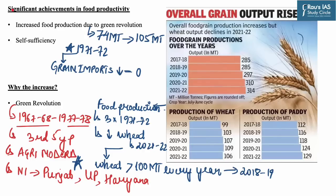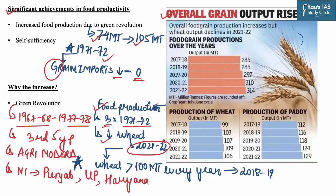In this news article, significant achievements in food productivity have been shown. Due to the Green Revolution, the production of food grains increased from 74 million tons in 1966-67 to 105 million tons in 1971-72. In 1971-72, India became self-sufficient with grain imports declining to nearly zero. Food production today is three times that of the 1971-72 period. Despite a decline in wheat production in 2021-22, wheat production remained greater than 100 million tons every year since 2018-19.